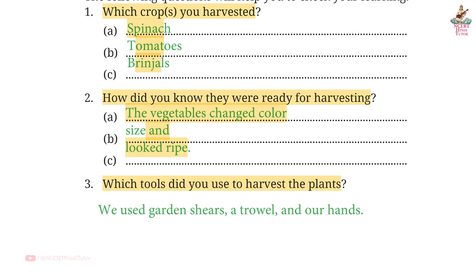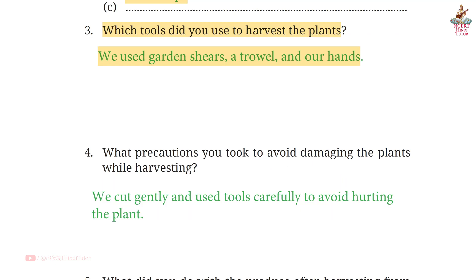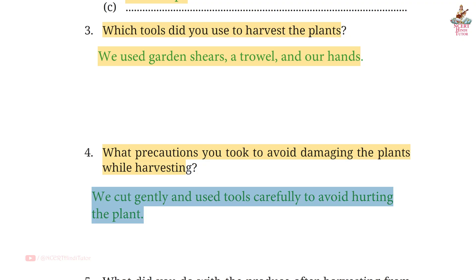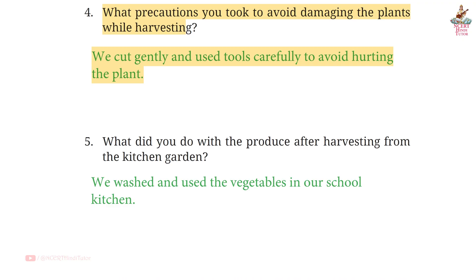Question 3: Which tools did you use to harvest the plants? Answer: We used garden shears, a trowel, and our hands. Question 4: What precautions did you take to avoid damaging the plants while harvesting? Answer: We cut gently and used the tools carefully to avoid hurting the plant.